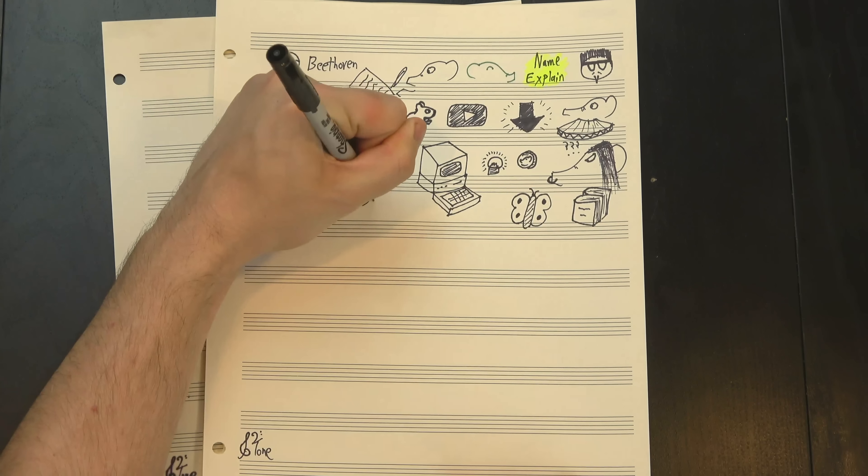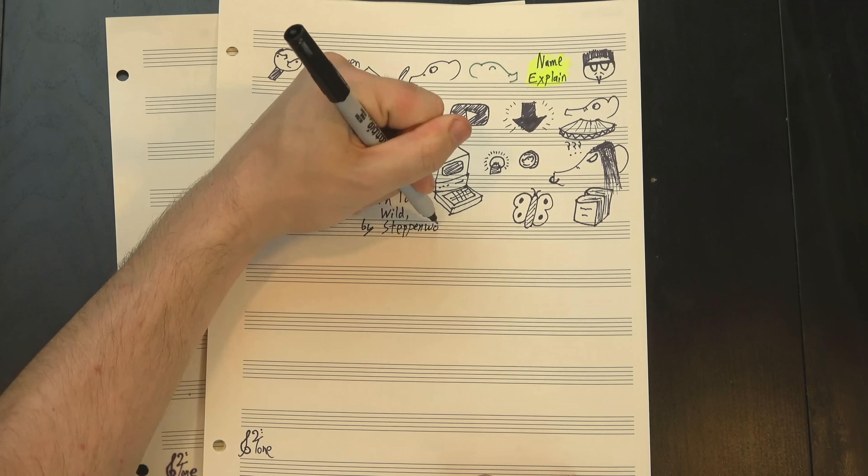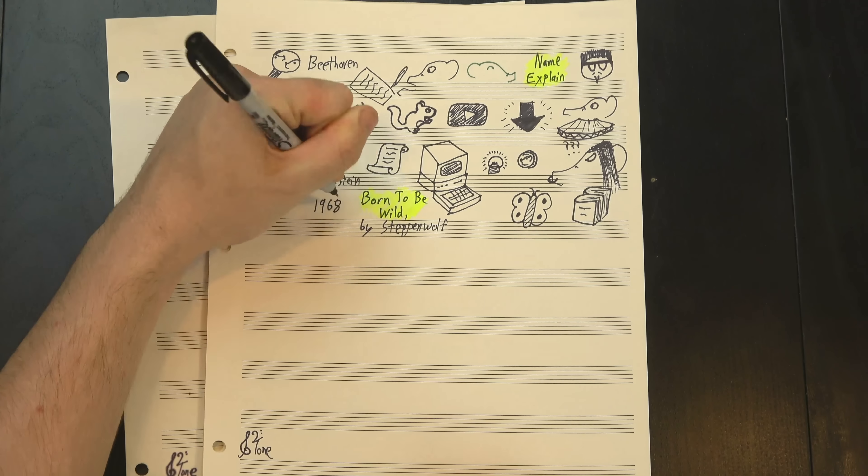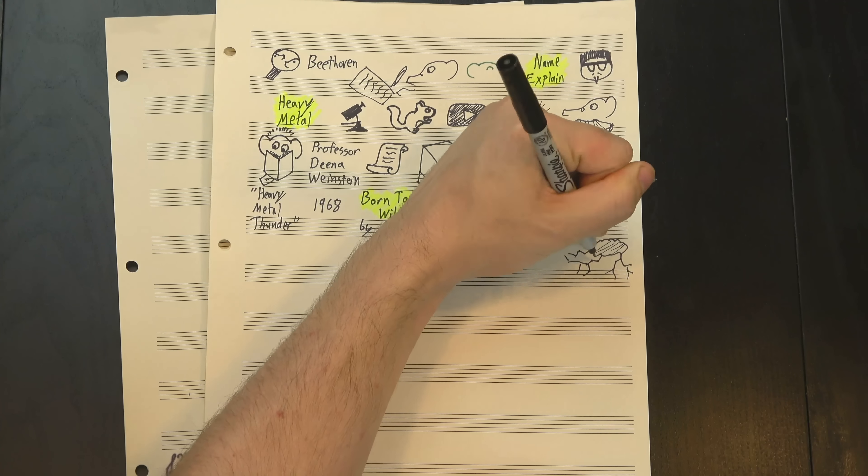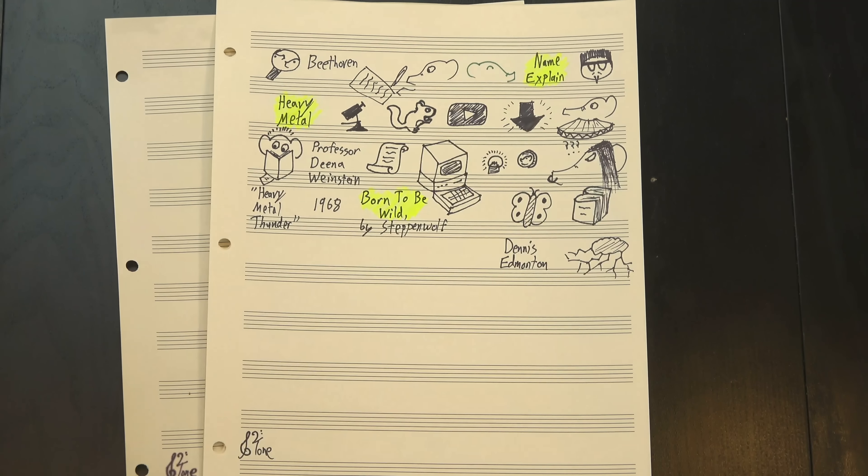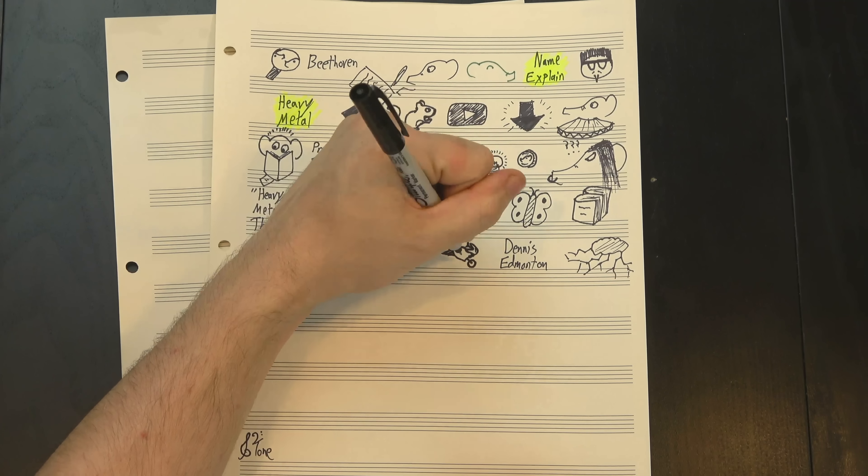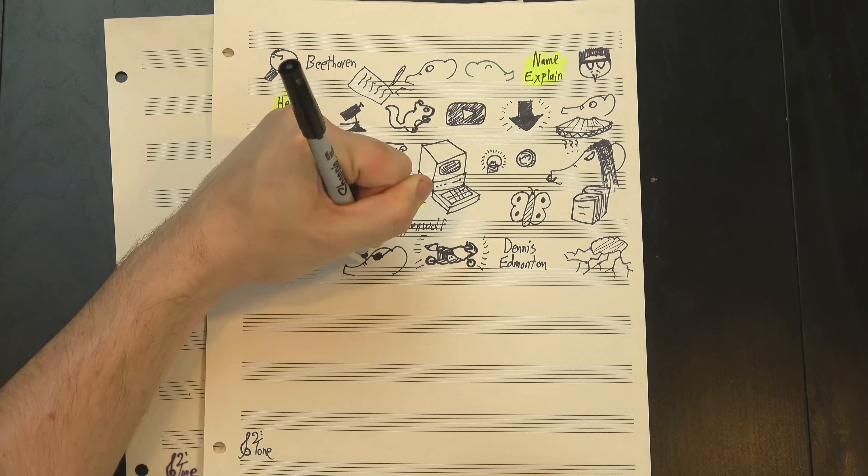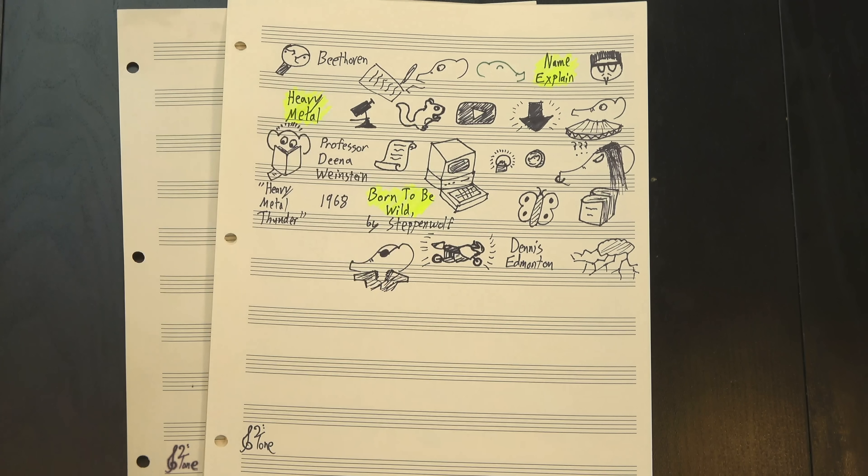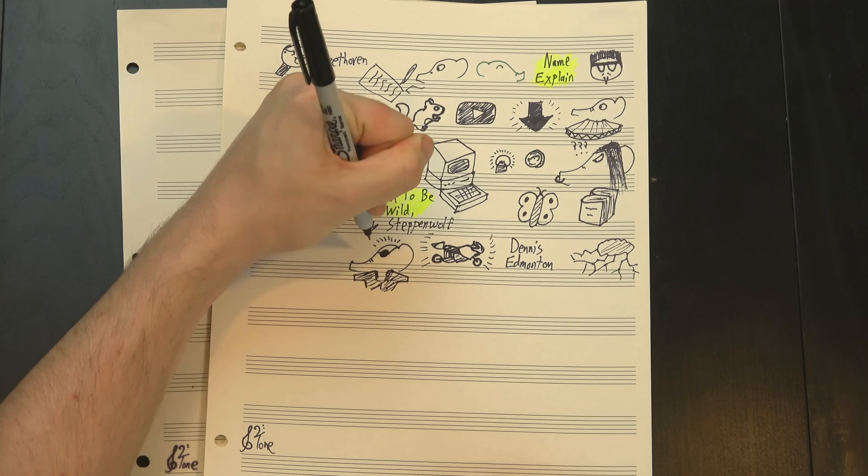There's a couple possible sources here. The one I'd always heard was that it came from the Steppenwolf song Born to be Wild, released in 1968, whose lyrics mention heavy metal thunder, making it probably the first song to use the term. The lyricist Dennis Edmonton described it as an attempt to represent the thunderous roar of motorcycles, which are both heavy and metallic. Given the prevalence of biker fashion in modern metal, it's easy to see why this etymology would be appealing.